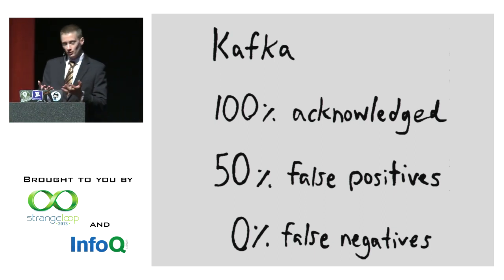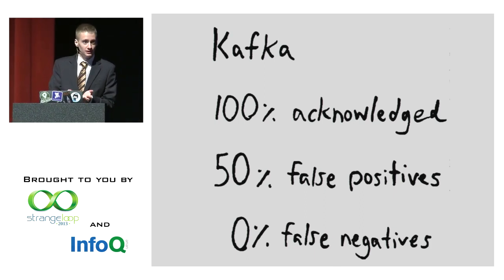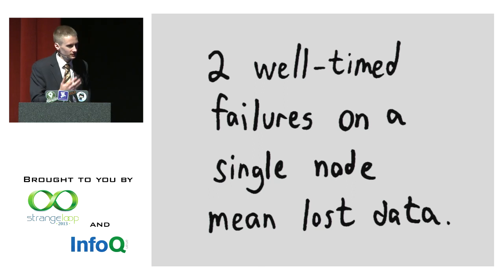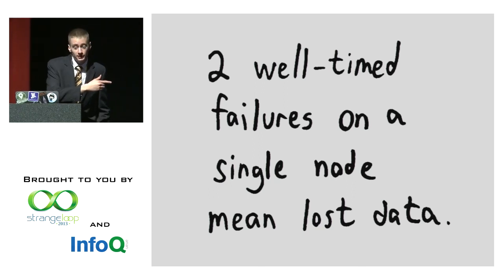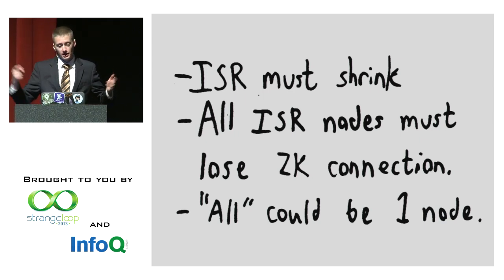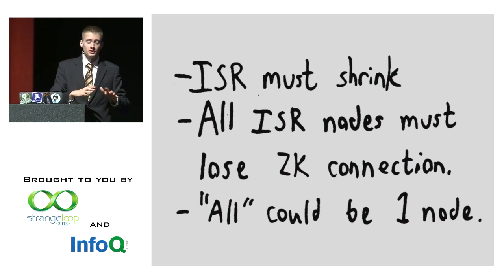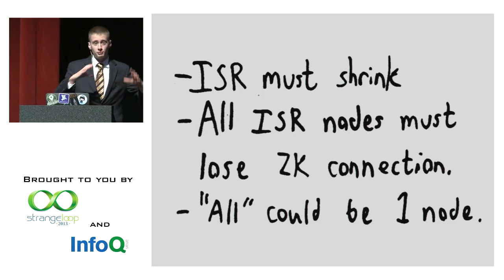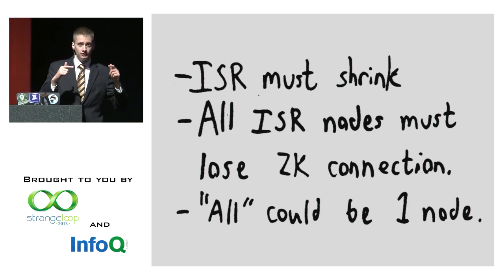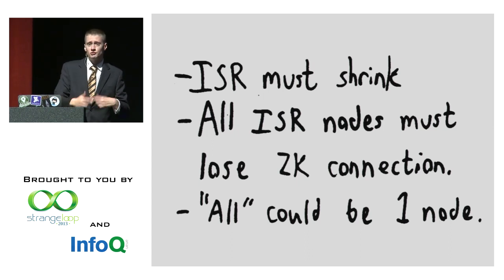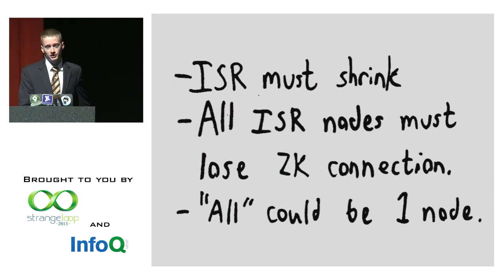Because in a well-balanced cluster every node is a leader for something, if this happens to any node you're going to see data loss. You need two failures: first the in-sync replica set has to shrink so a stale node exists, and then all in-sync replica set nodes have to lose their ZooKeeper connection, forcing handoff to the new leader. So if a leader is partitioned away from the rest of the cluster, and then its disk crashes, it loses power, the ZooKeeper cluster gets messed up, or an administrator reboots the node — all of these things would force re-election and cause data loss.